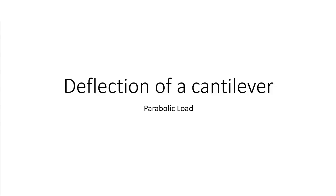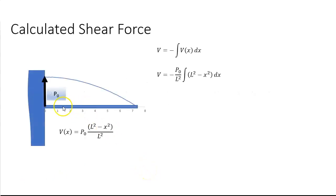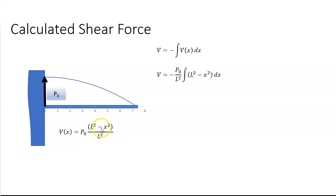In this video we're going to look at the deflection of a cantilever beam subjected to a parabolic load. If we have a beam, the load at any point v(x) is equal to p₀ times (l² minus x²) all over l², where p₀ is the value at the root. That's our load equation.